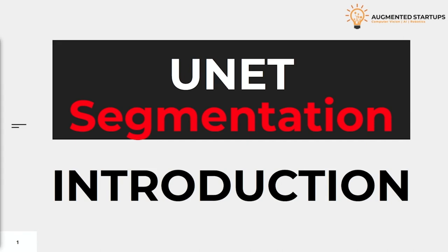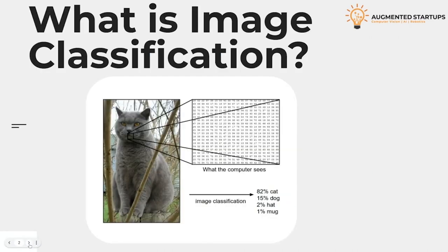Before moving on, let's start with the basic understanding of image classification. Image classification is the task of categorizing or assigning a label to an image. Here we have an example image of a cat. Being a human, we can easily recognize the different features in this image and classify it as a cat.